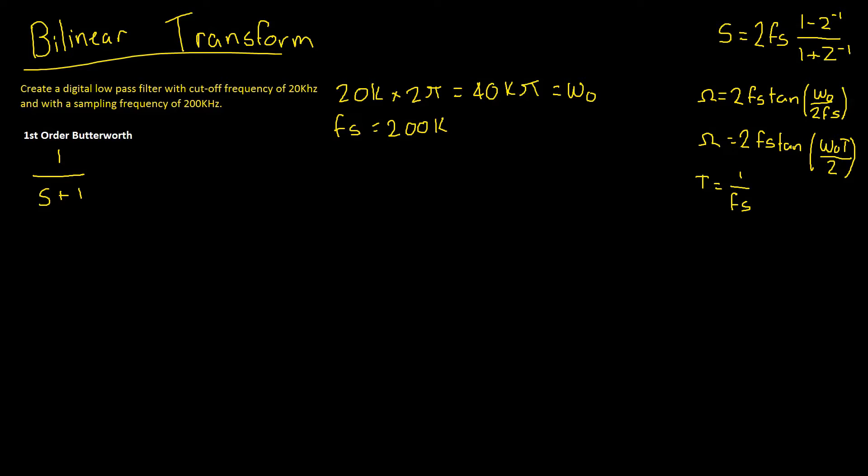So when performing the bilinear transform, we can perform this on any analogue filter. For simplicity here, we've been given a first-order Butterworth, so we only have one S term. However, in more complicated filters, the process remains exactly the same. The only thing that changes is that the algebra is a little bit more messy.